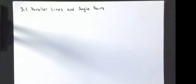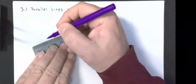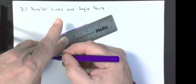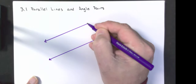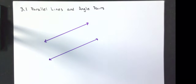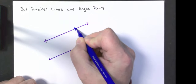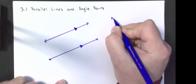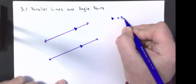The first thing we're going to do is talk about parallel lines and angle pairs. I'm going to draw a set of parallel lines. We use triangles on the lines to indicate that they are parallel — these filled-in triangles mean that we have parallel lines.